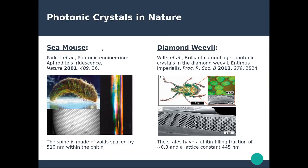Other examples include the sea mouse and the diamond weaver. They also have periodic structures — on the spine of the sea mouse, there is a periodic array made of voids. The spine itself is made of chitin, which is a dielectric, and the voids form the periodicity with a spacing of 510 nanometers. The weaver has a similar chitin-filled structure with a lattice constant of 145 nanometers.